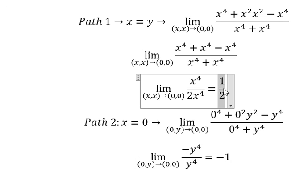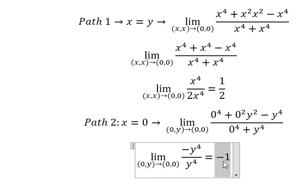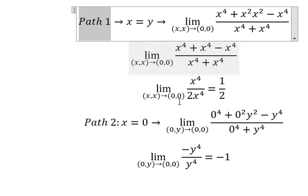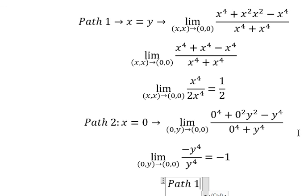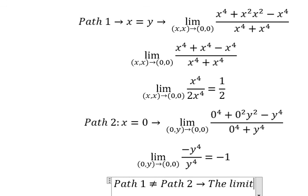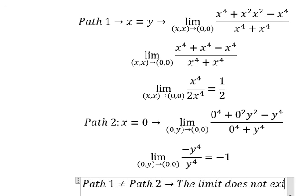We see that part number one is one over two. Part number two is negative one. That means part number one is not same with part number two. So we can say that the limit does not exist.